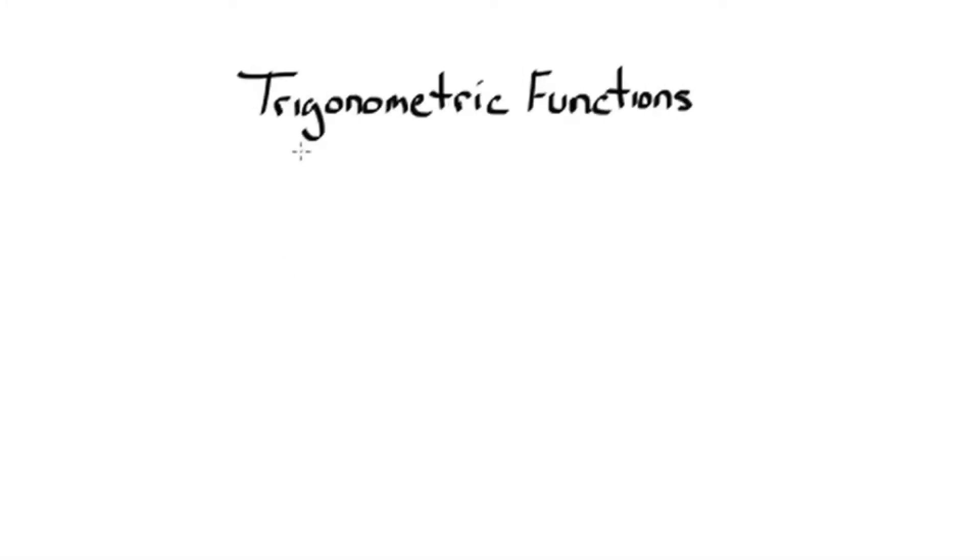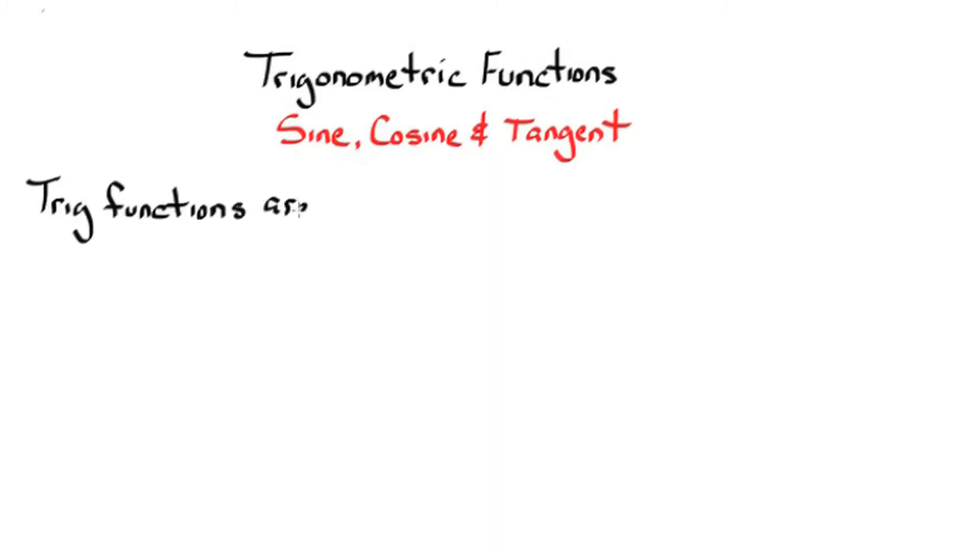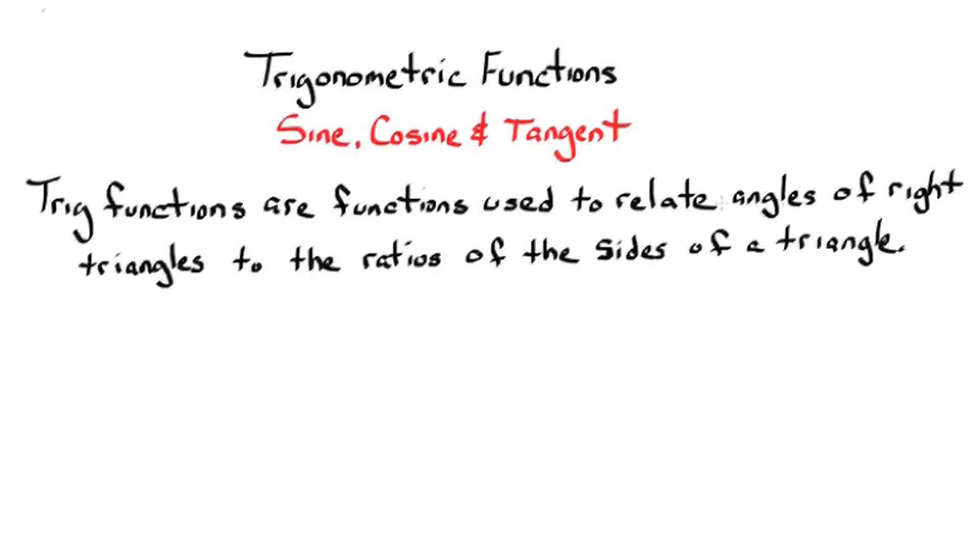Trigonometric functions sine, cosine, and tangent. The trig functions are functions used to relate angles of right triangles to the ratios of the sides of the triangle.